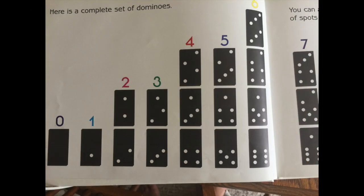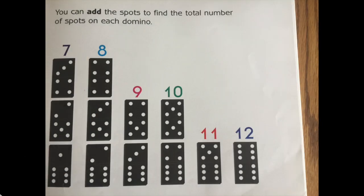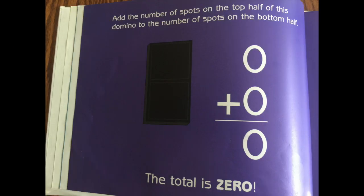Here is a complete set of dominoes. You can add the spots to find the total number of spots on each domino. Add the number of spots on the top of this domino to the number of spots on the bottom half. Zero plus zero equals zero. The total is zero.